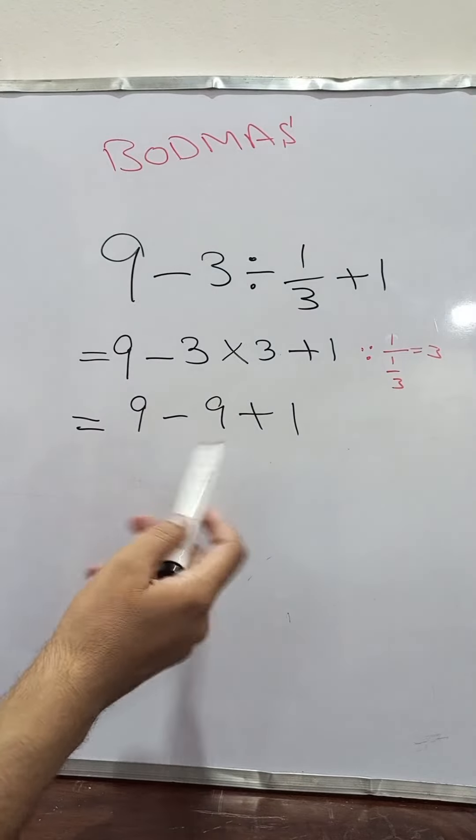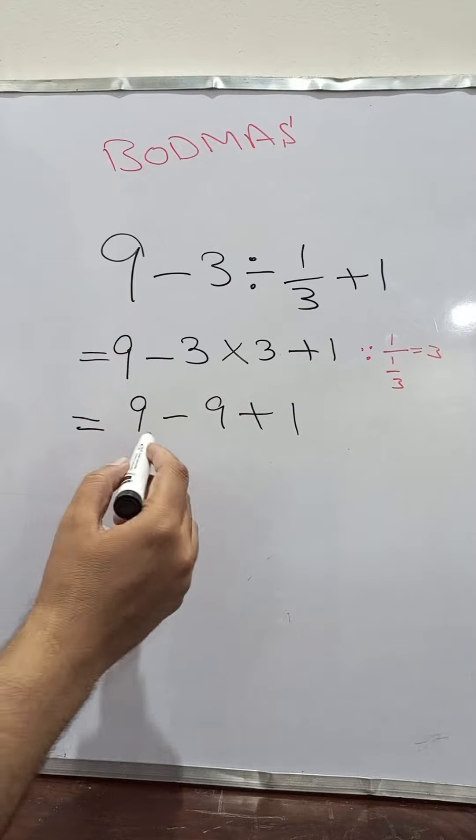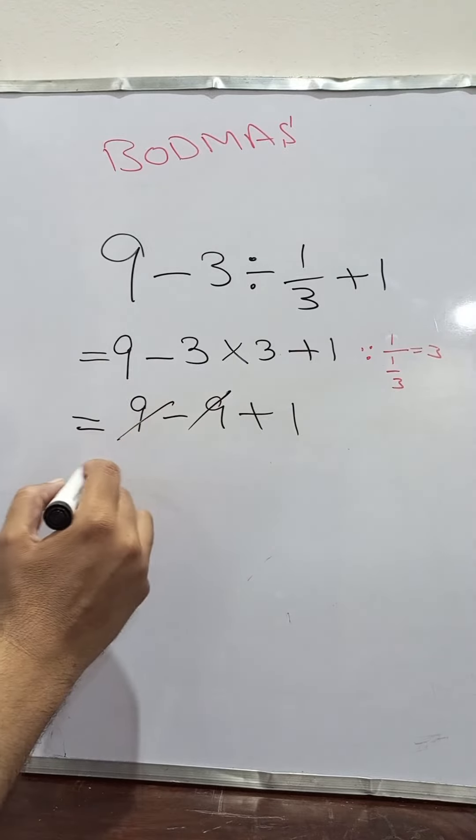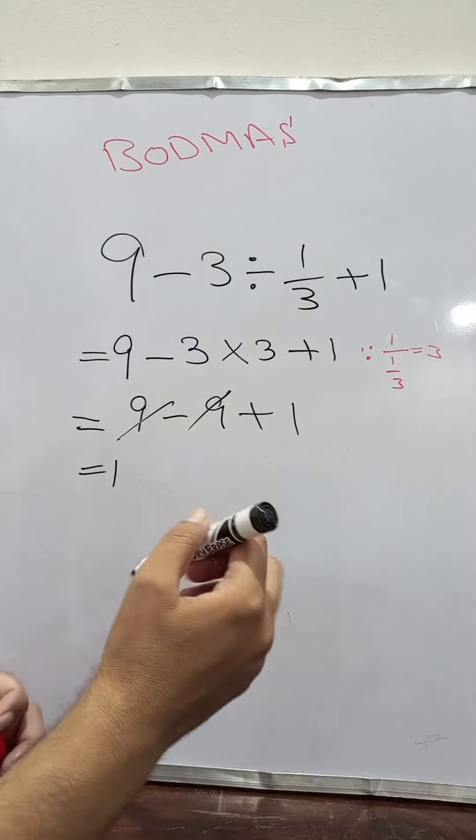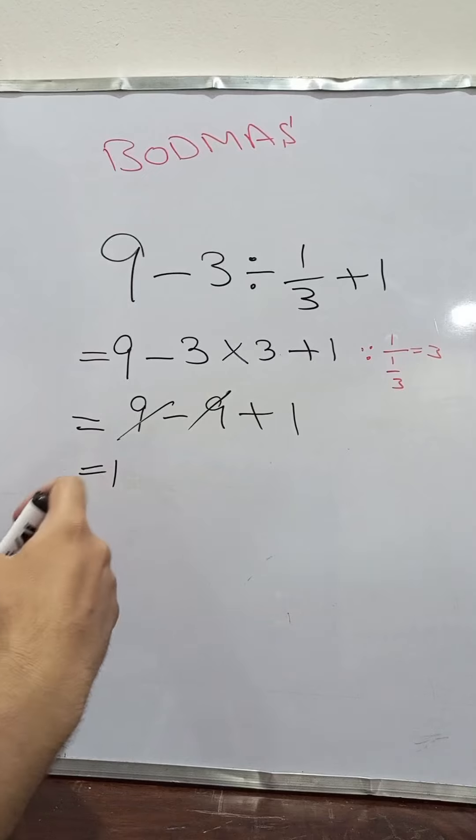Or, I have other option that I cancel out plus 9 and minus 9 and get the answer 1. So, answer will be the same in both cases.